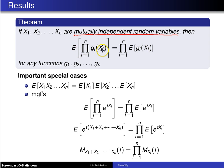So here, the expected value of the product is the product of the expected values for any functions g1 to gn.